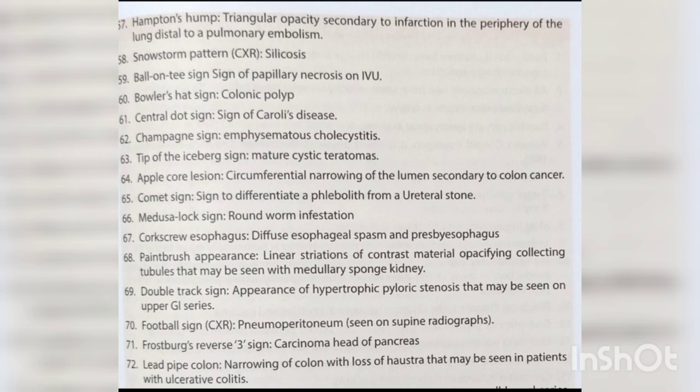Champagne sign — emphysematous cholecystitis. Tip of the iceberg sign — mature cystic teratomas. Apple core — circumferential narrowing of lumen secondary to colon cancer. Comet sign — to differentiate a phlebolith from a ureteral stone. Medusa lock sign — roundworm infestation. Corkscrew esophagus — diffuse esophageal spasm. Impressed by esophagus paintbrush appearance — linear striations of contrast opacifying collecting tubules seen with medullary sponge kidney.